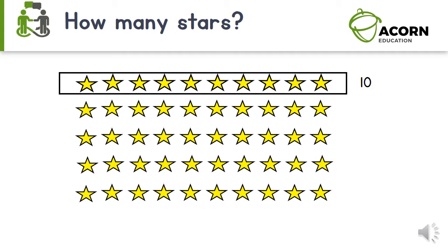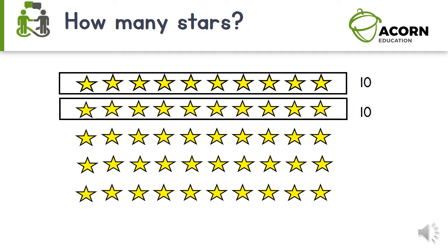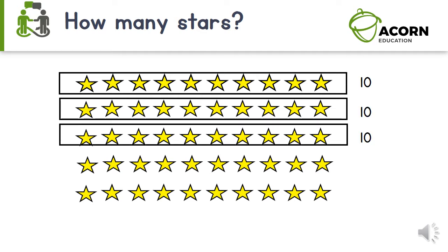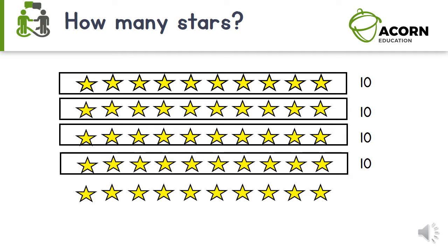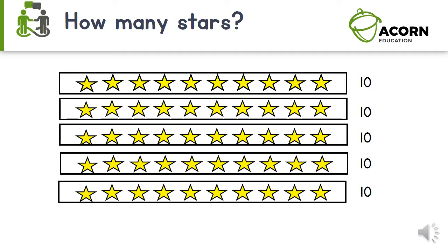We could do this many ways, but for now let's just put them in equal groups of ten. This is one group of ten. This is another group of ten. And another group. There's another group of ten. And this is our last group of ten. Now that we've put the stars in equal groups of ten, let's count the groups to find out how many stars we have altogether. Ten, twenty, thirty, forty, fifty. There are fifty stars altogether.